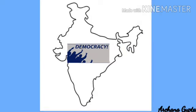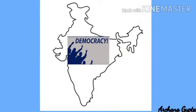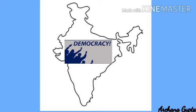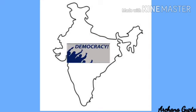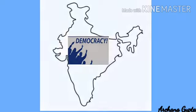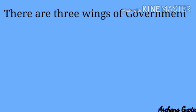Our constitution declares India to be a democratic republic and vests supreme power with the people. People exercise their power through their representatives who make and amend laws in the Parliament of India. To run the government smoothly, there are three wings of the government which are more or less independent in their respective sphere.